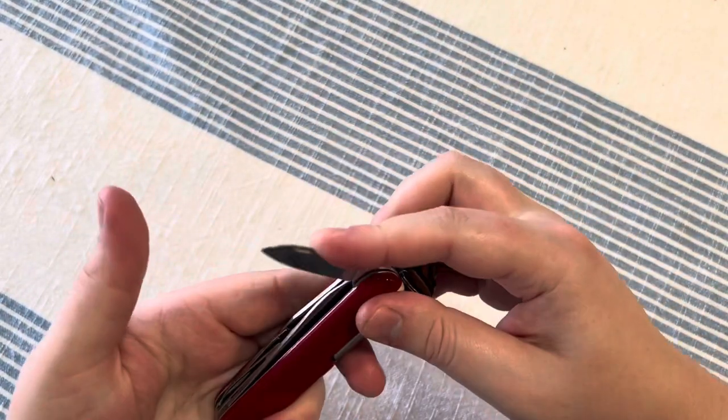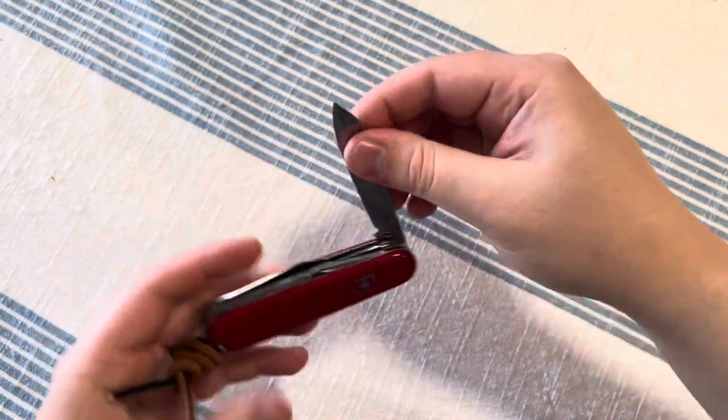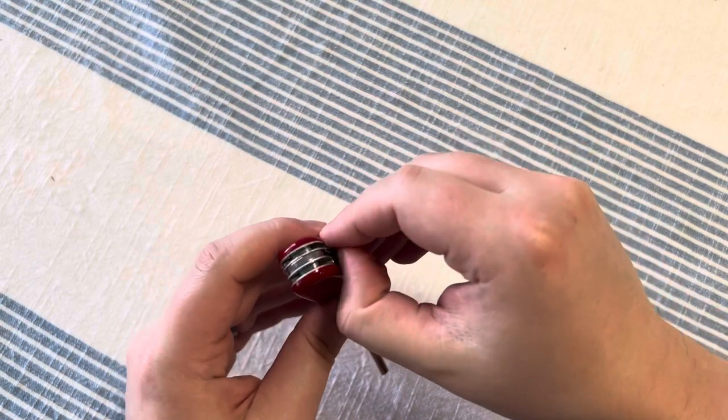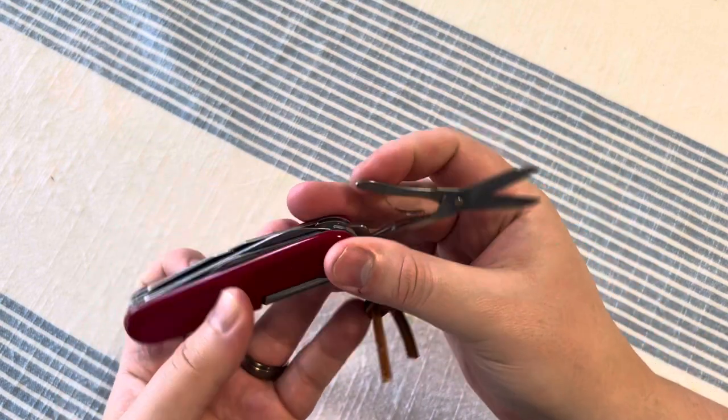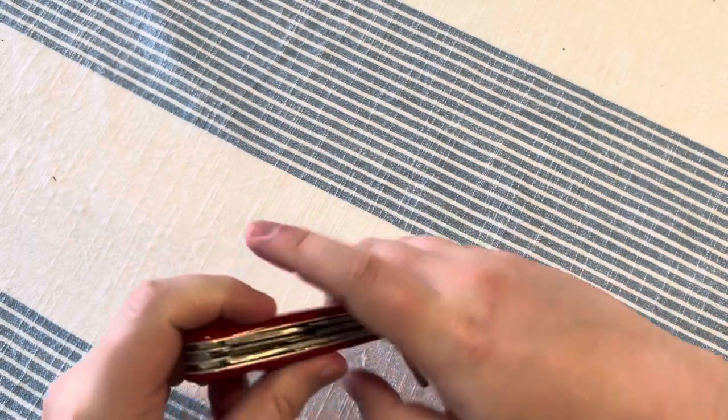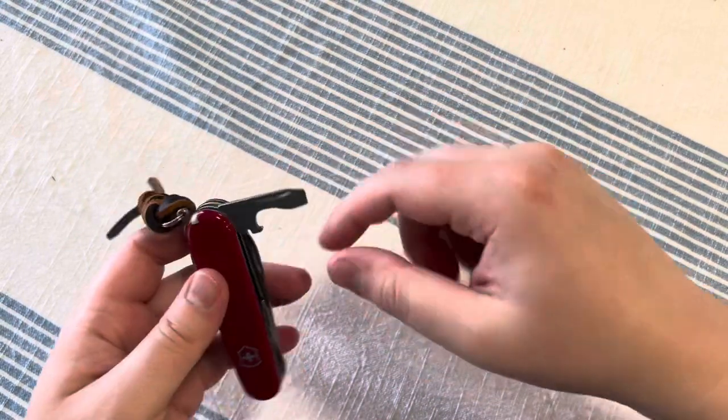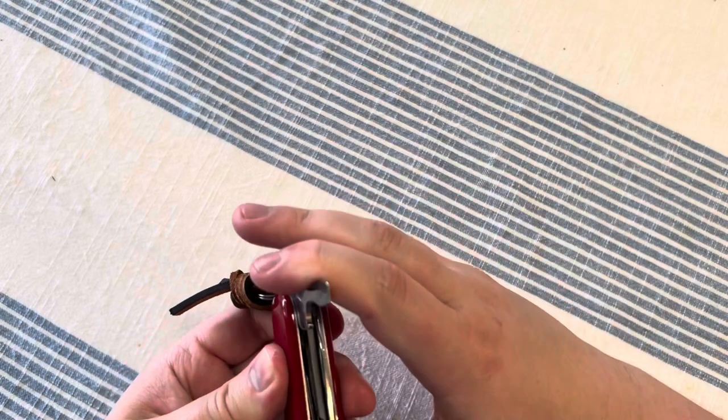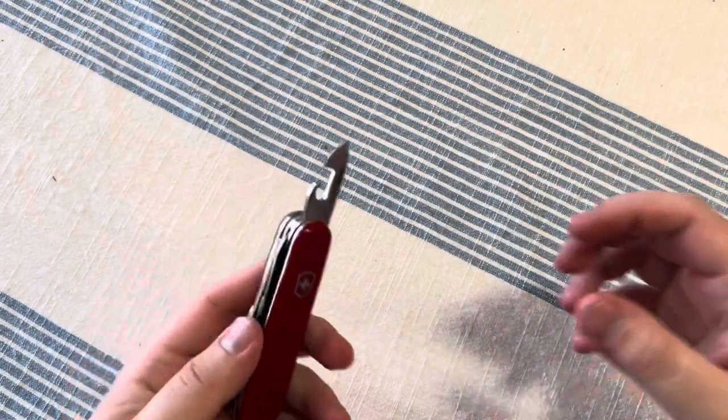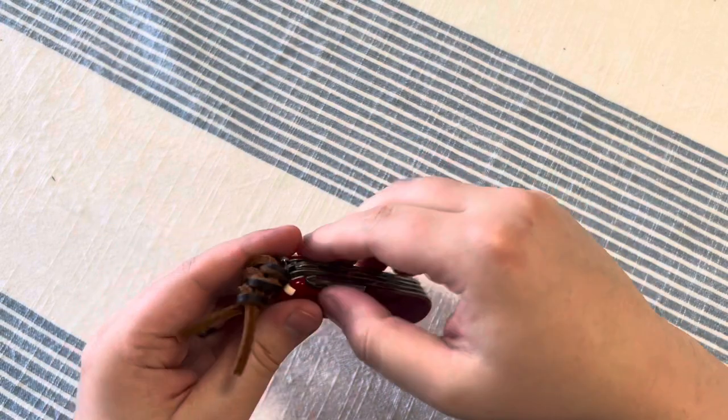Small blade. Big blade. Scissors. Very good scissors, might I add. Very sharp. I used these the other day at work. Flathead slash bottle opener. I've yet to use the bottle opener. I'm looking forward to it though. Can opener. Move on to the back.